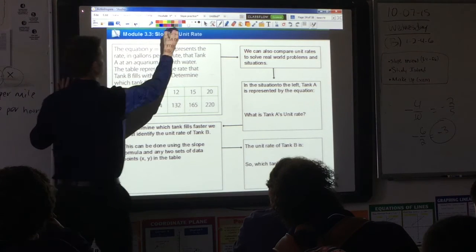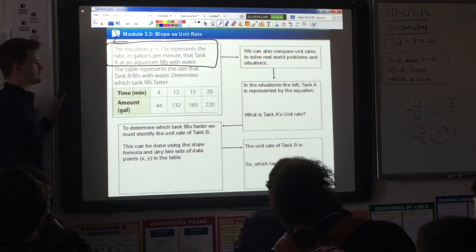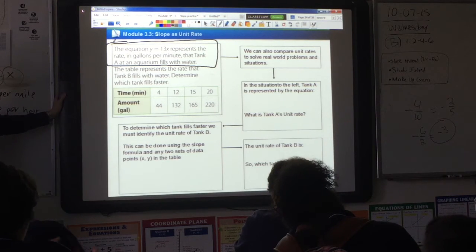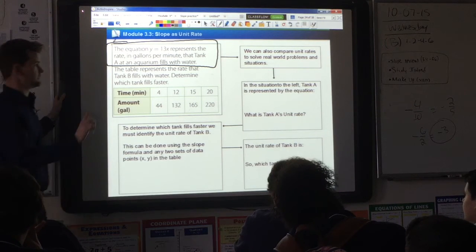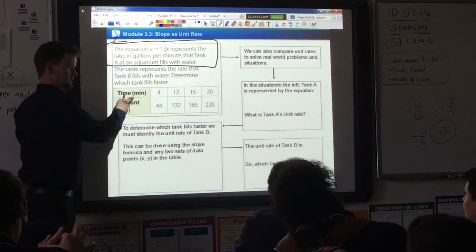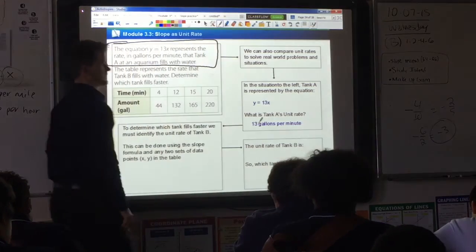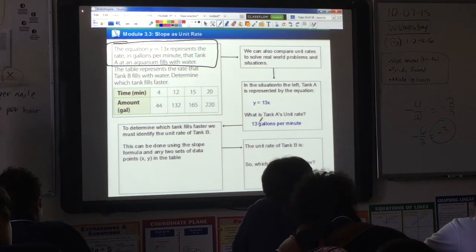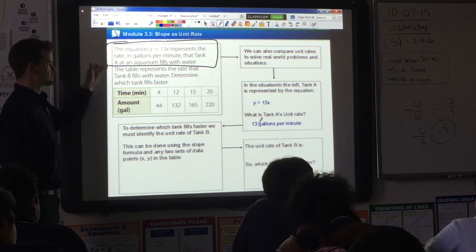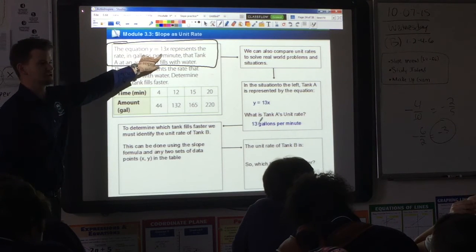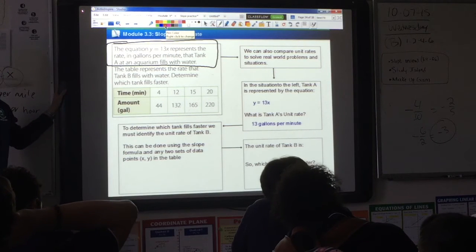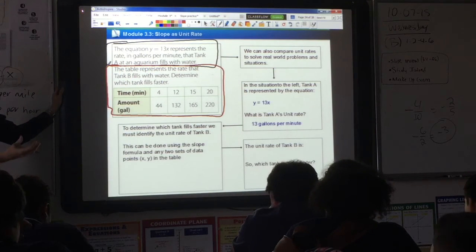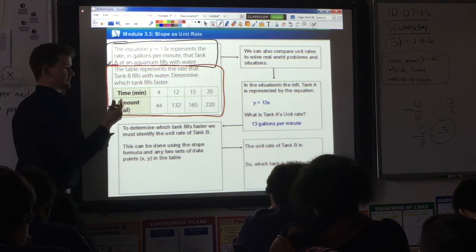We have two different things happening here. First thing is we have tank A, and it is filling with water at a specific rate. What is the unit rate for tank A? Kind of gives it to me, right? What is it? It's 13 gallons per minute. Y equals 13x. The equation is y equals 13x. We simply take out the slope as a unit rate: 13 gallons per minute. That's the first piece of information. But the question being posed to us here is which tank fills faster? They gave us the slope of tank A. Now, for tank B, what did they give us here? A table. This represents tank B. We are comparing the two, so we need to identify the unit rate or the slope for tank B.